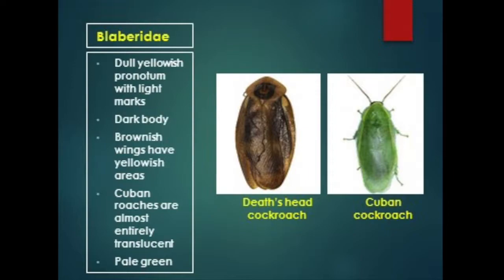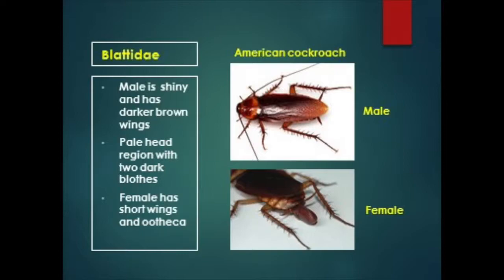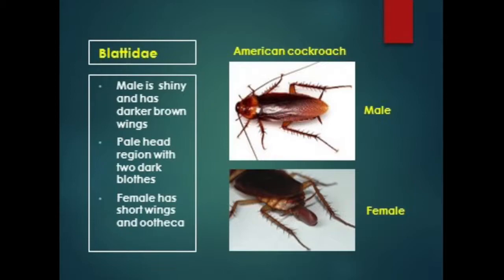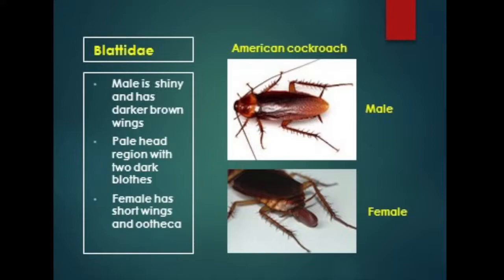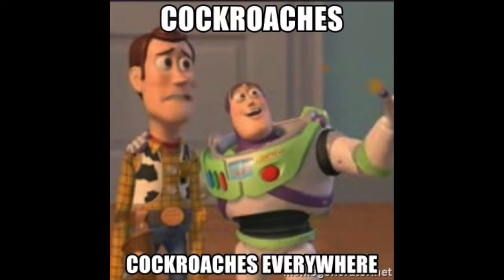The Cuban cockroach is different in this group in terms of color — the Cuban roach is almost entirely translucent and pale green. For the Blatidae family, the American cockroach is the most common. The male is shiny and has darker brown wings. The head region is pale with two dark blotches. The female has short wings and carries an ootheca.